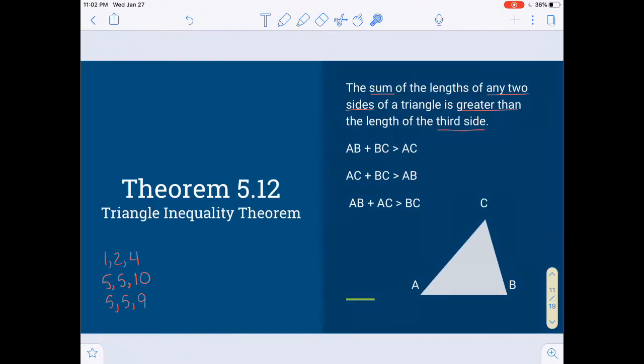The triangle inequality theorem, theorem 5.12, is a little bit different. It says the sum of the lengths of any two sides of a triangle is greater than the length of the third side. So whichever two sides you take in turn, they have to add up to more than the third side. So if you take AB and BC, it's going to be greater than AC. Or if you do AC plus BC, it's going to be greater than AB. Or if you take AB and AC, it's going to be greater than BC.